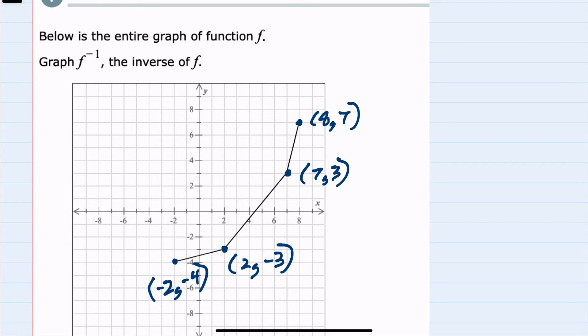And now to find the inverse function, we would switch each of these coordinates. So the 8, 7 becomes 7, 8. The 7, 3 becomes 3, 7.